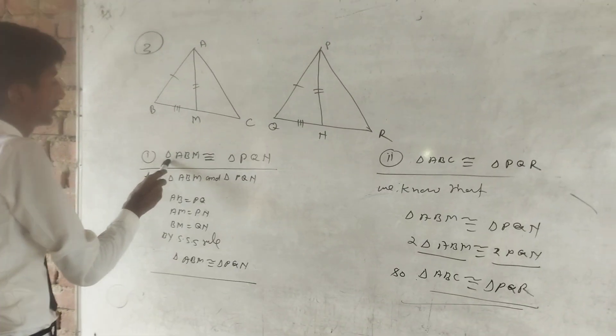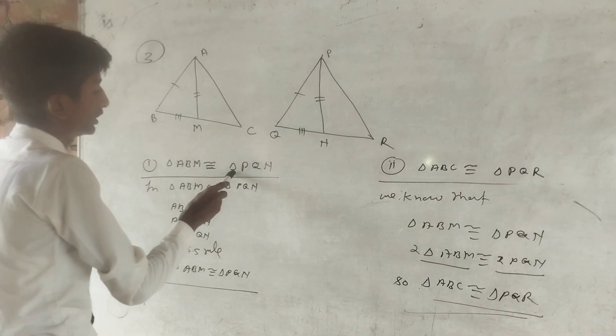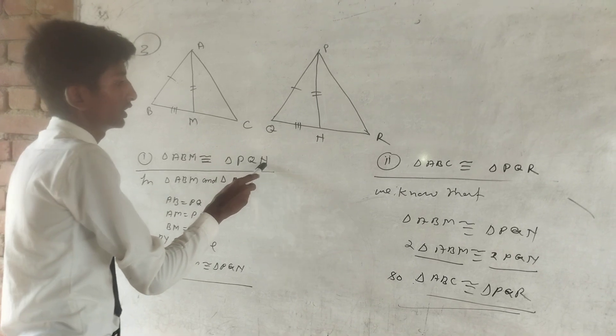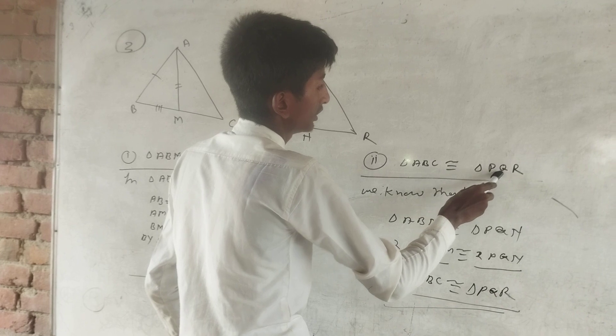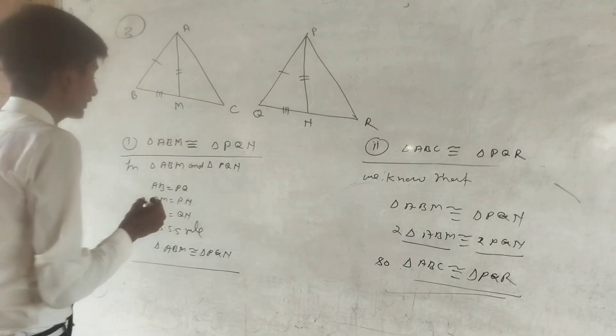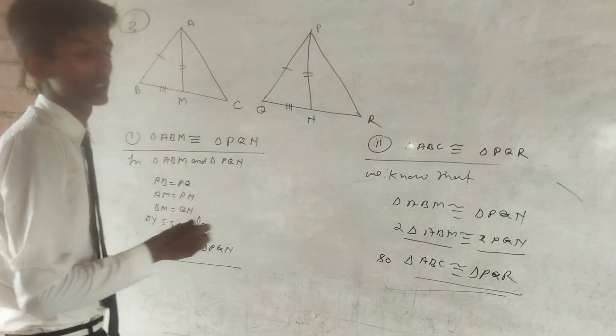First, angle ABM congruent to angle PQH. And second, angle ABC congruent to angle PQR. This is the second question and this is the first question.